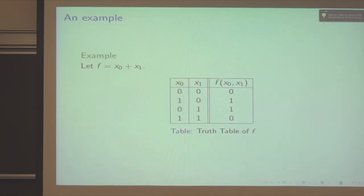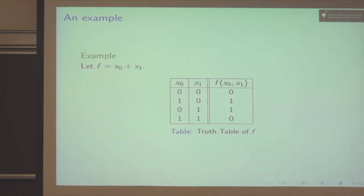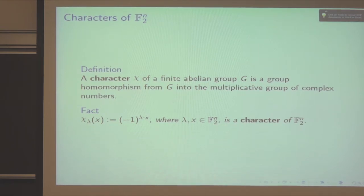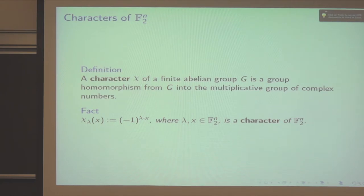With Boolean functions, you want to know the truth table. A simple example is XORing the two inputs, which produces the same table as the XOR operation — this is a linear Boolean function. If you include ANDs, you get non-linear terms that complicate things. To measure non-linearity, we use the Walsh transform. Before introducing that, I'll describe the characters of GF(2)^n. For each character chi, there's a vector lambda in GF(2)^n associated with it. The character function chi_lambda of an input x is computed as (−1)^{lambda · x}.